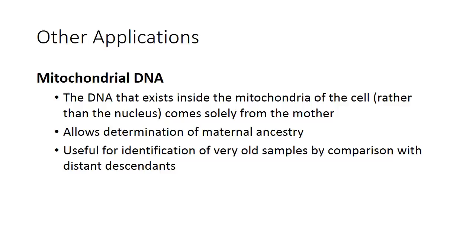Mitochondrial DNA is passed down through the maternal line — from mother to child — through generations. It varies relatively little compared with chromosomal DNA in the nucleus, which varies a lot from generation to generation. Examination of mitochondrial DNA allows determination of maternal ancestry, tracing someone back through their mother's genetic line. This can be useful for identifying very old samples by comparison with distant descendants — for example, working out who are long-lost descendants of Genghis Khan, or finding connections between very distant relatives today.